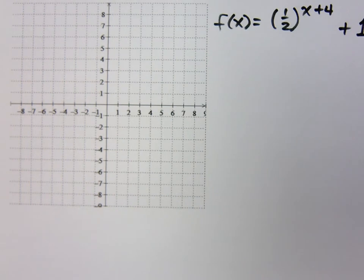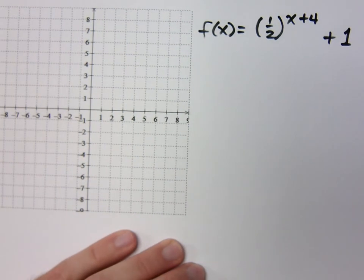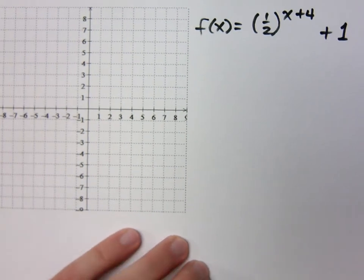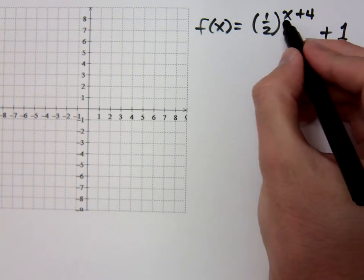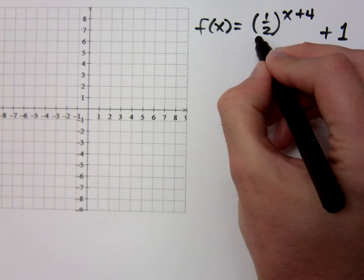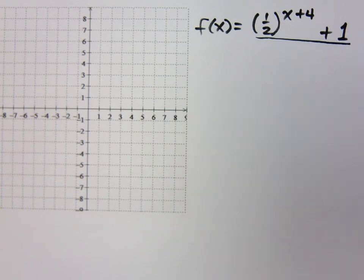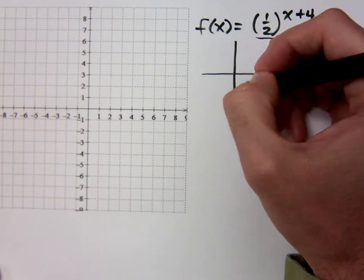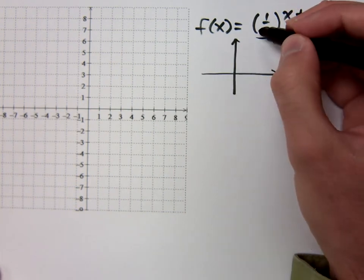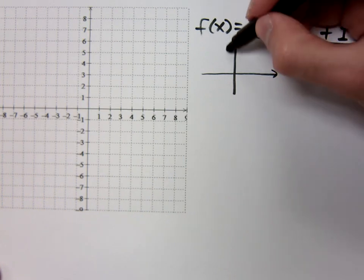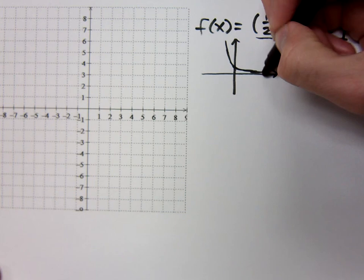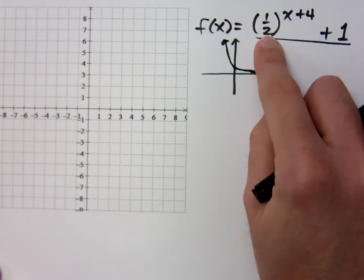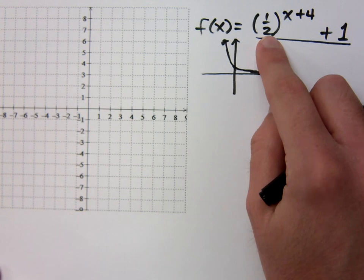Let's look at f of x equals 1 half raised to the x plus 4 plus 1. Make sure that when you write things, you are writing them in the right spot. You can clearly see this is an exponent, and this is on that same normal line as the rest of everything else. Now, since this is 1 half for the base, that means my exponential is not going to be increasing — it's going to be decreasing, because as you move out to the right, you keep multiplying times 1 half every time.